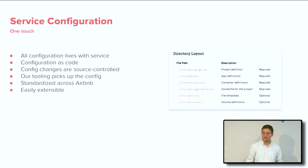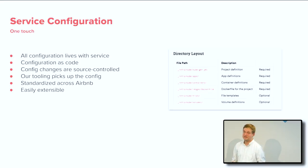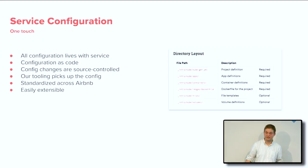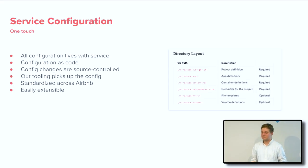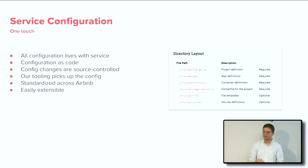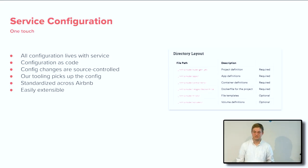We also have something called OneTouch. All of your configuration for your service lives in the repo of your service — configuration as code. Which test framework do you want? Which programming language and version? How often do you get deployed? What kind of containers? All of that lives inside the repository, tracked as source code. It's extensible — people can create a new testing framework and say 'if test type equals this, use this new framework.' In a single touch, all your configuration lives inside your microservice — it's a small, self-sustainable service.